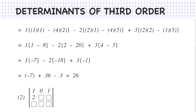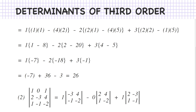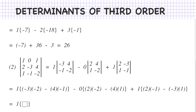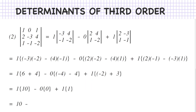Another example: determinant of 1, 0, 1, 2, minus 3, 4, 1, minus 1, minus 2. Expanding: 1 into determinant of (minus 3, 4, minus 1, minus 2), minus 0 into determinant of (2, 4, 1, minus 2), plus 1 into determinant of (2, minus 3, 1, minus 1). This gives 1 times (minus 3 into minus 2 minus 4 into minus 1), minus 0, plus 1 times (2 into minus 1 minus minus 3 into 1), which is 1 times (6 plus 4) plus 1 times (minus 2 plus 3), giving 1 times 10 plus 1 times 1, which equals 11.